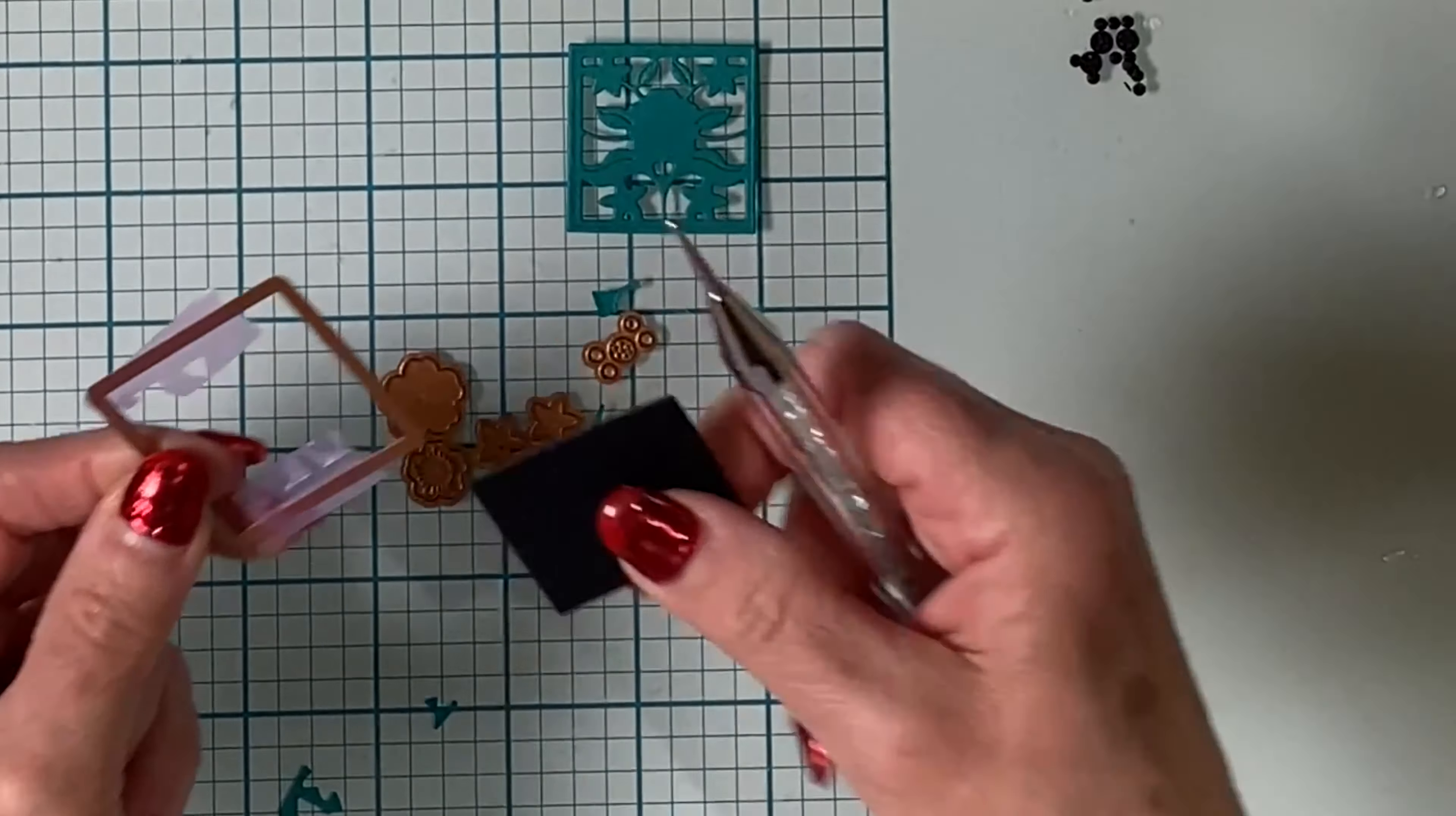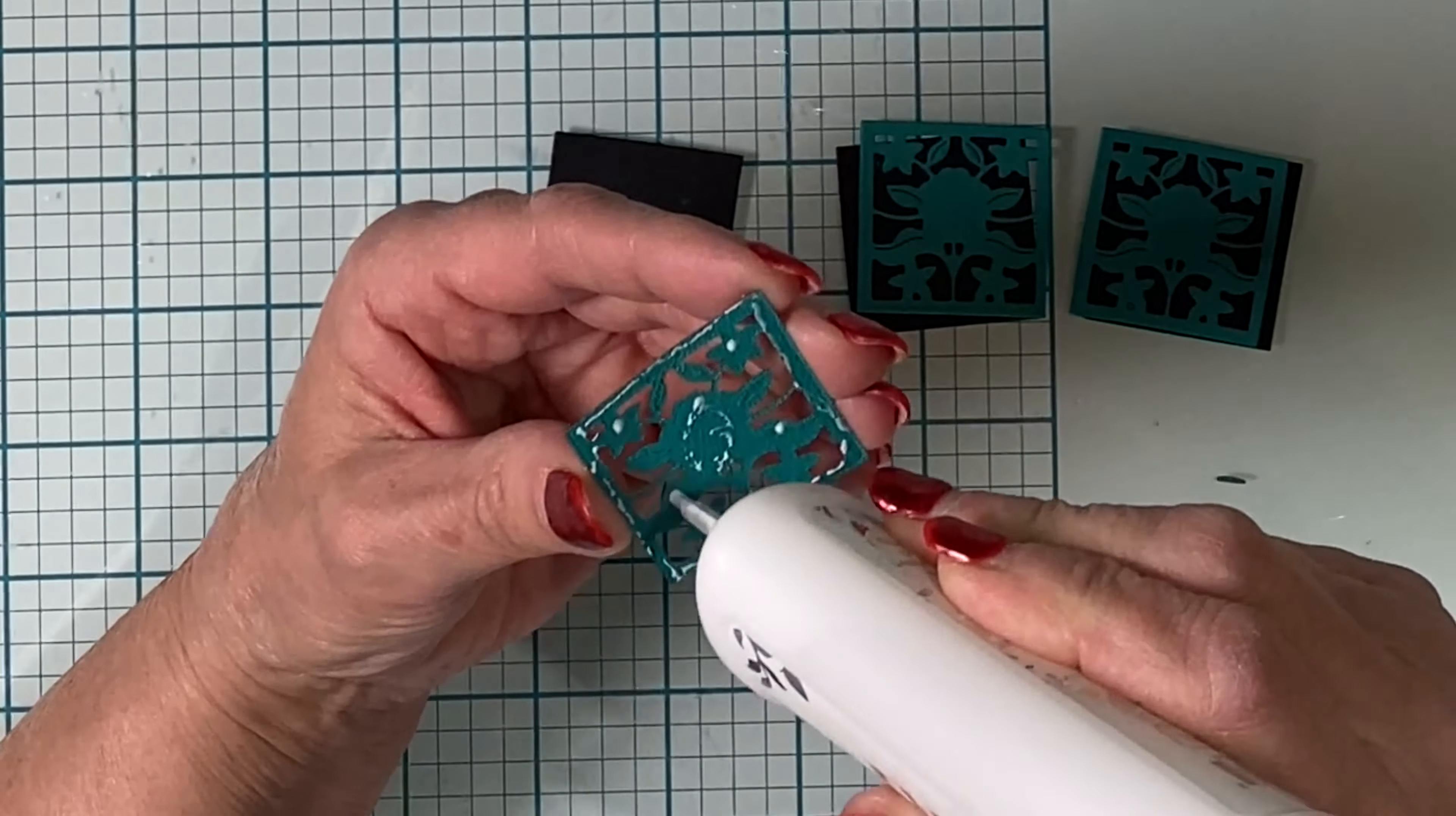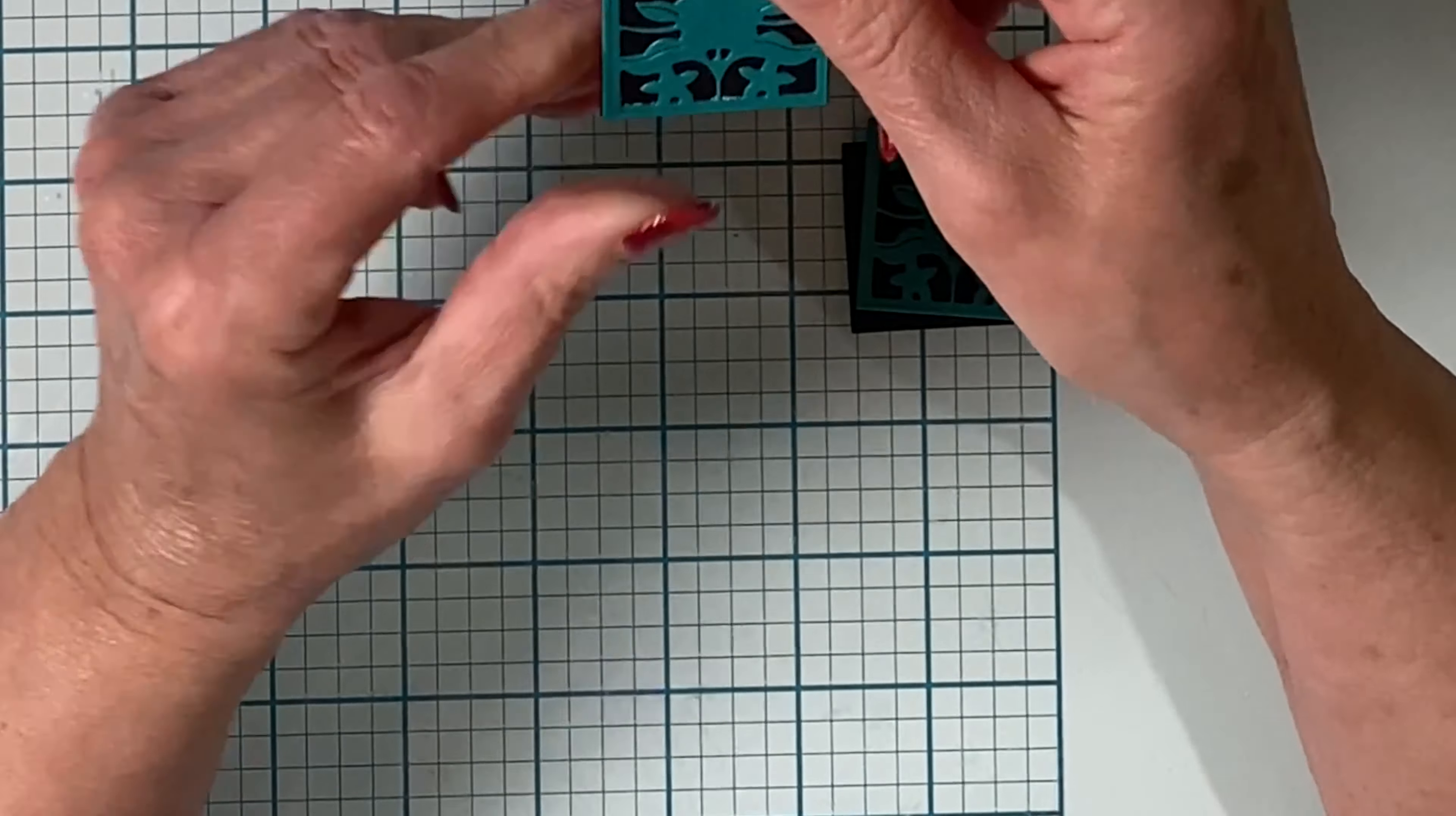The square die on its own was used to cut black cardstock. This die cut will be the background for each of the tiles, and I'm creating three tiles so I do this two more times.